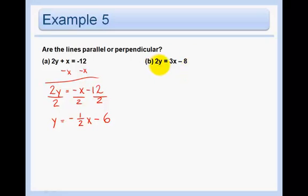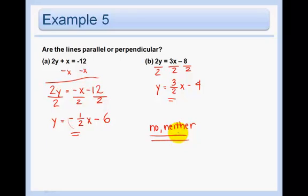And part b, they already have a y on a side all by itself. So all I have to do is divide everything by 2. Divide by 2. Divide by 2. And I get y equals 3 halves x minus 4. Well, are these parallel? Are the slopes the same? No, definitely not. Are the slopes negative reciprocals? No, they're not. The negative reciprocal of this would have just been 2. And that's not 2. So are the lines parallel or perpendicular? No, neither. And so that's our answer. And that's it.